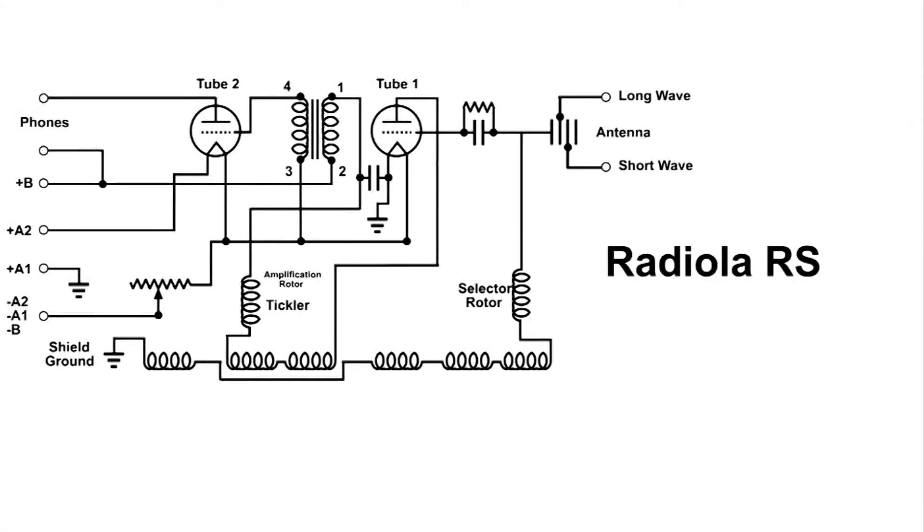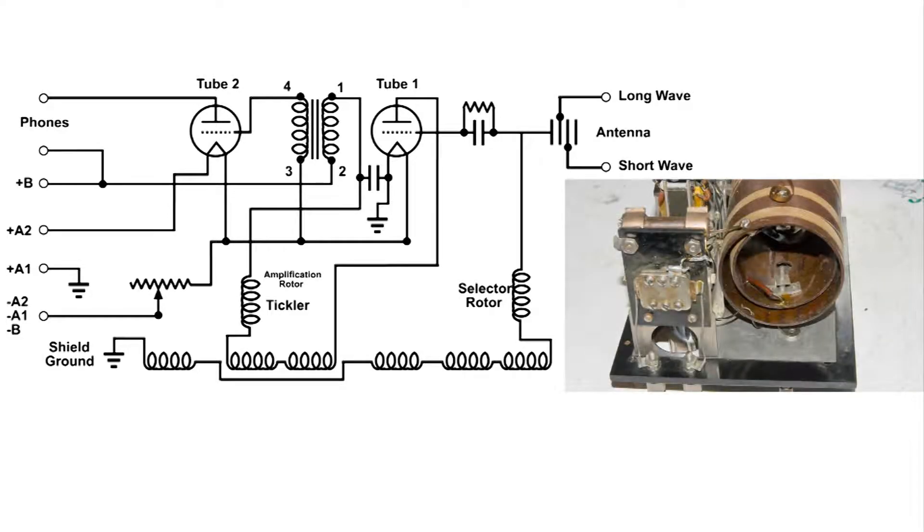This is the wiring diagram of a Radiola RS, a radio produced by Westinghouse for RCA in about 1923. I thought I'd go through and identify some of the major parts and then go through the circuit.